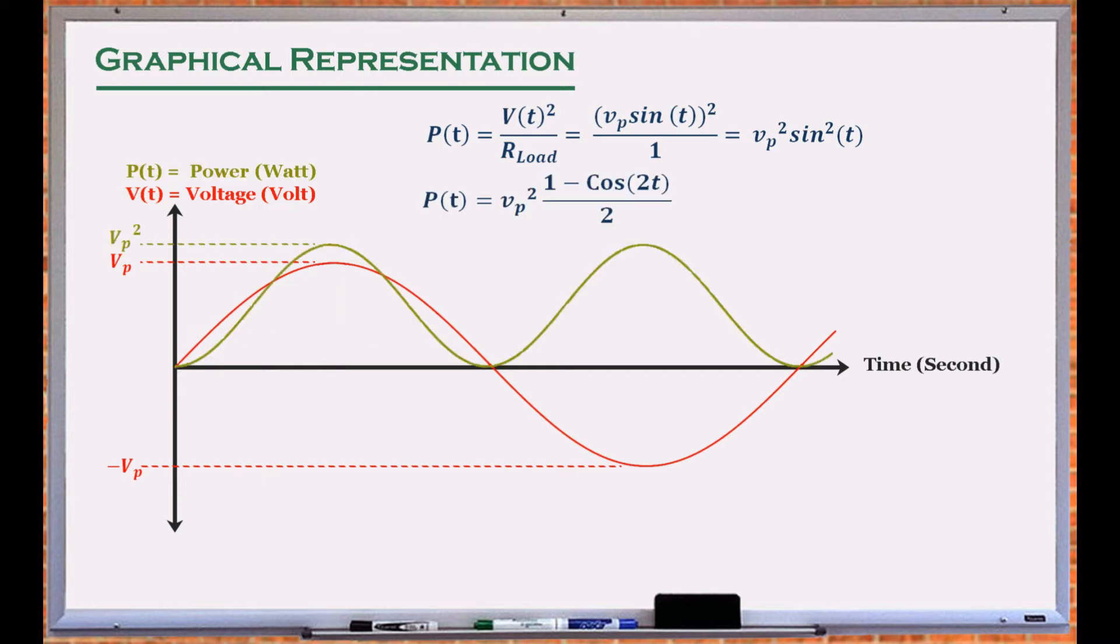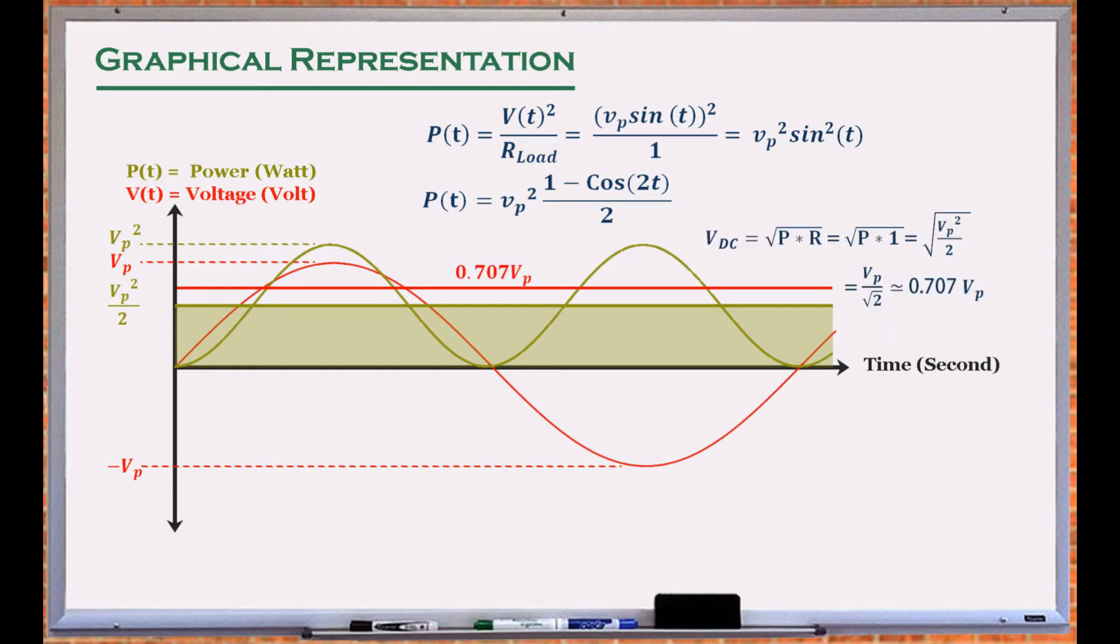Looking at the graph, it is evident that the power signal is always positive and symmetric around the middle horizontal value. This value is the average power dissipated through the load. An equivalent DC voltage that generates the same power is the square root of this average. Therefore, the RMS value of the sine wave is the square root of this value, which is Vp divided by the square root of 2.